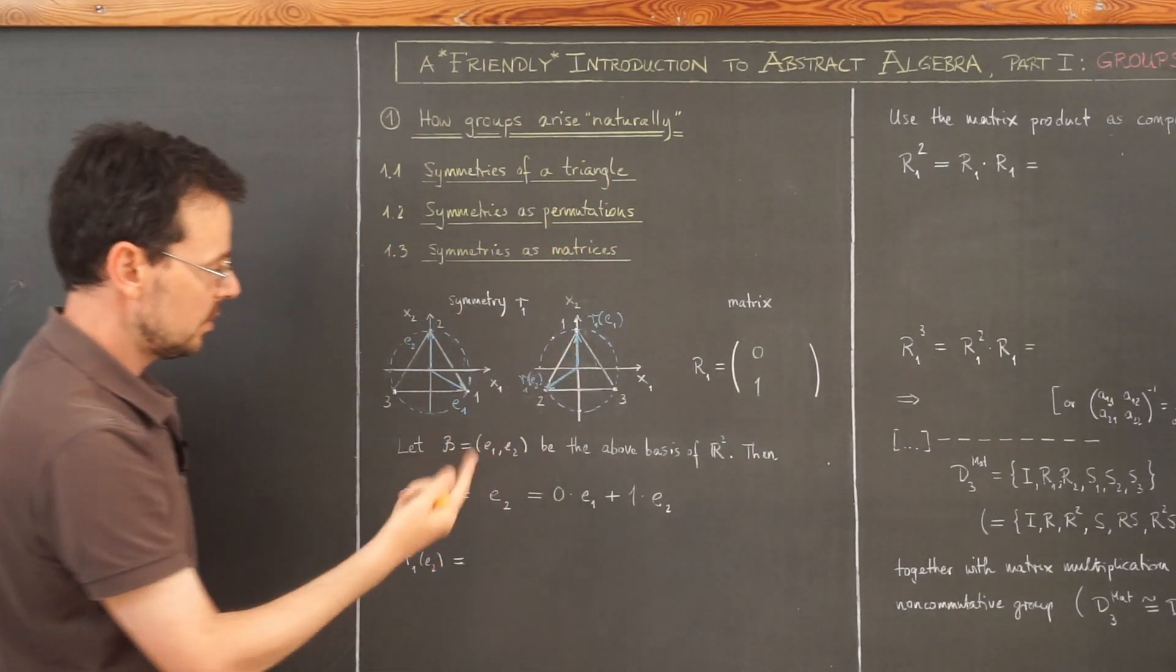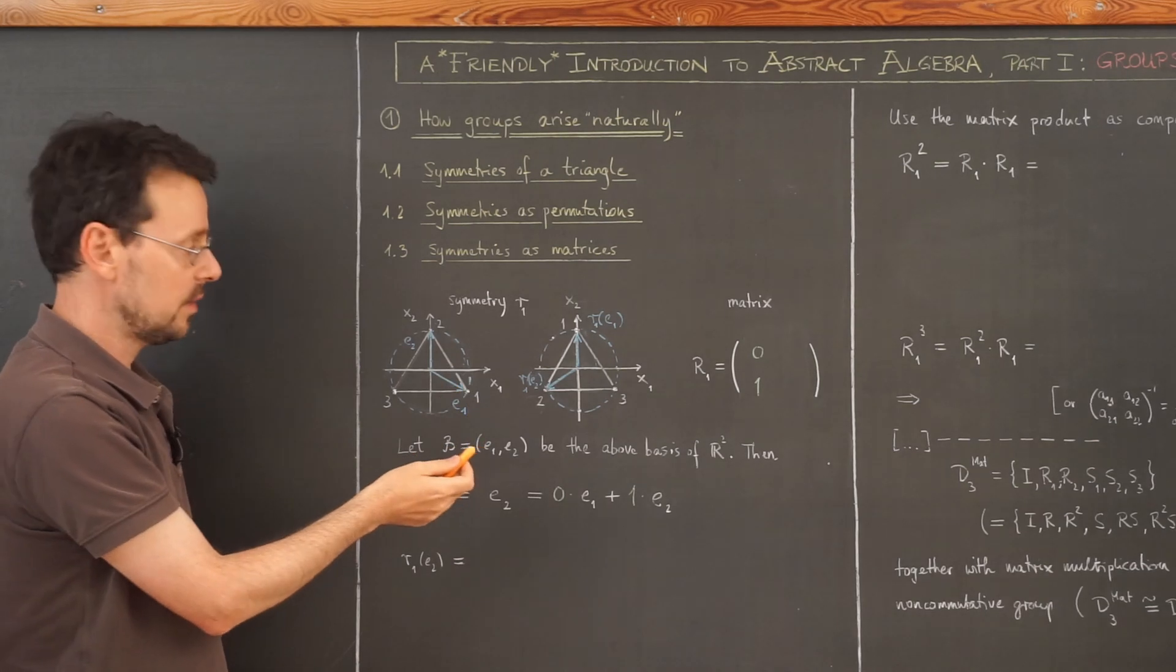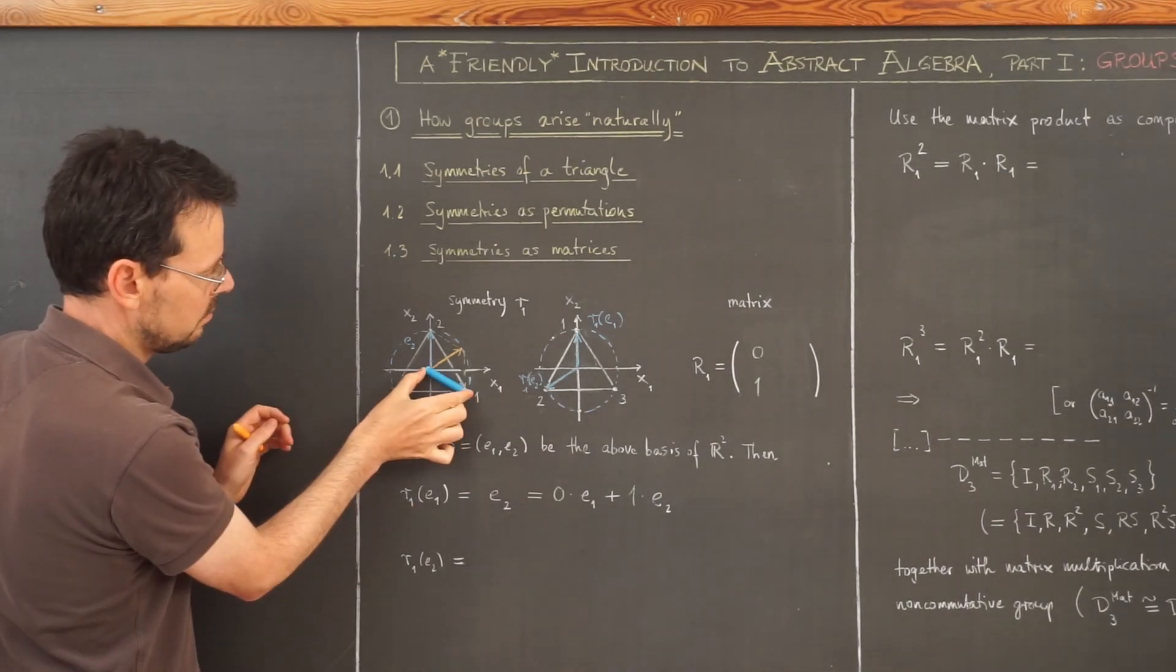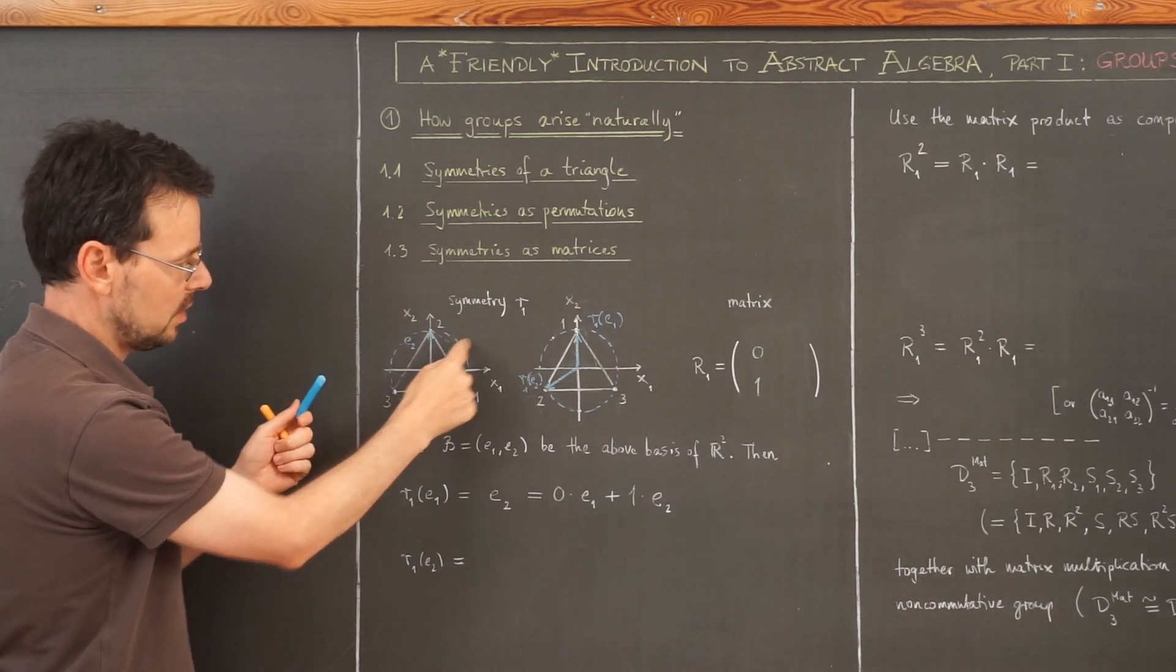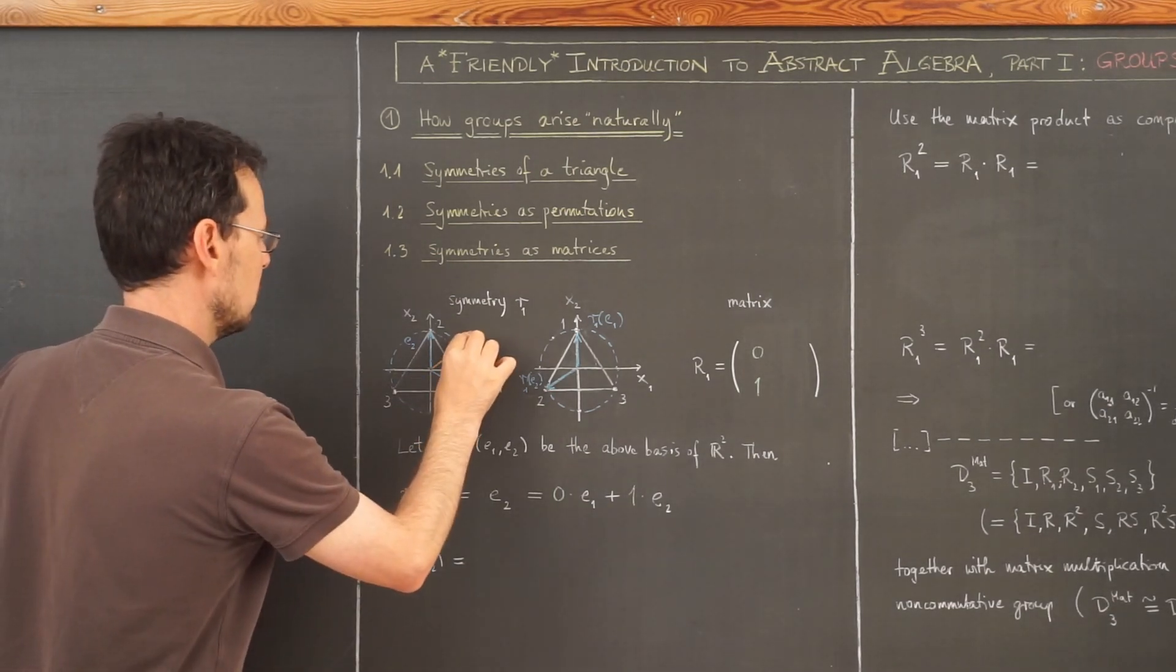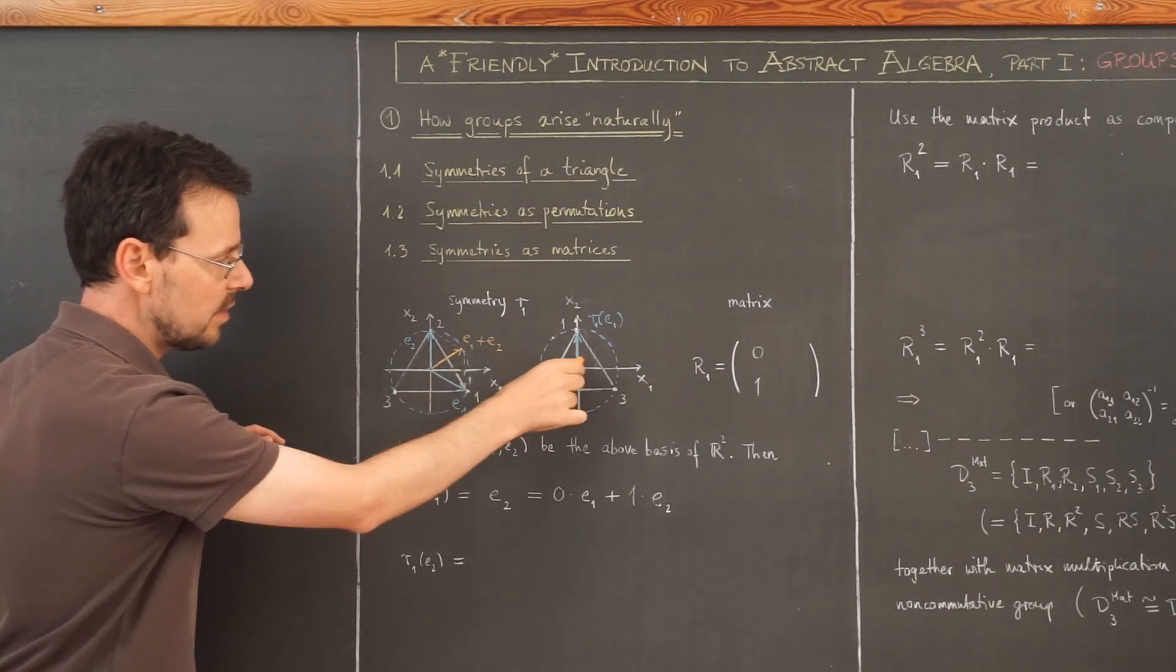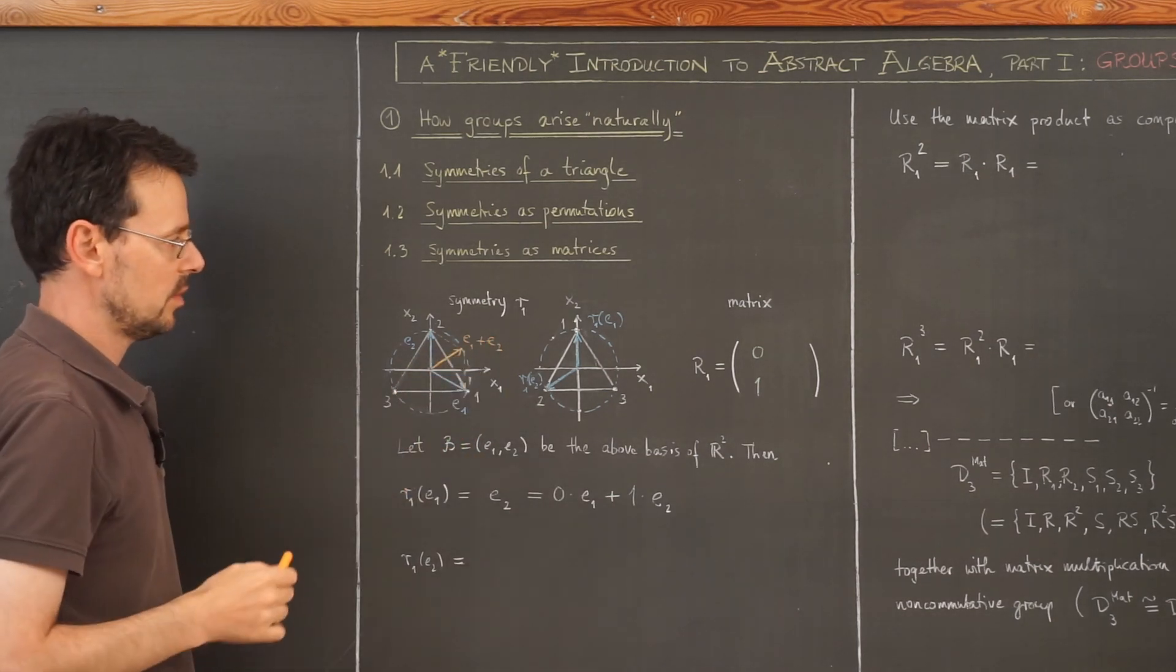Now for this vector here, we have to make the following observation. If you add these two vectors by the parallelogram rule, this is not perfectly symmetric, but close enough. So you take this vector here and put it here. And then the end point of this vector gives me the end point of the sum of those two. So here is E1 plus E2. And then for symmetry reasons, this vector here is nothing but the negative vector of this one. This is the important observation here.